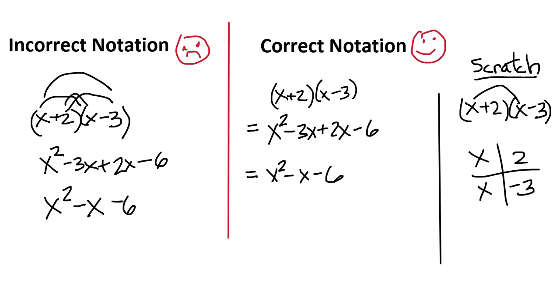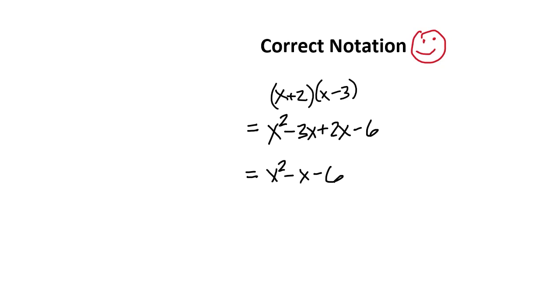Now let's look at the correct way of doing this. If you want to use the rainbows, mark off a separate area that is for scratch work. So your grader, your teacher, is not confused about what you're doing. I've also seen people use these squares. If you want to use those, put them in your scratch area. The correct notation is to write the beginning multiplication, and then line up the equal signs until you get the answer.